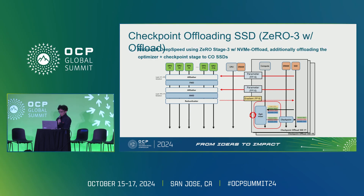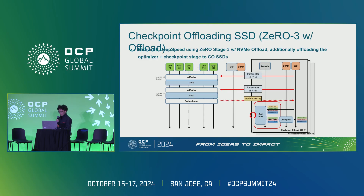During the optimizer stage, the checkpoint offloading SSD uses newly written gradients from the backward stage to update the optimizer state and create new parameters that are read during the next iteration's forward and backward pass. By enabling this data movement from GPU to SSD, the SSD can compute new checkpoint data simply by receiving gradient data as input.